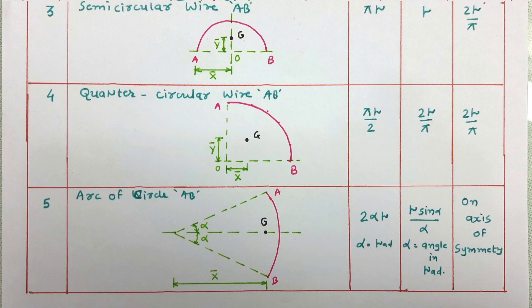So these are the standard one-dimensional shapes. You have to remember the area, volume, length, and centroid distances for all these shapes. Thank you for watching this video. If you have any doubt or query, please write in the comment box — I will be there to help you. Thank you.